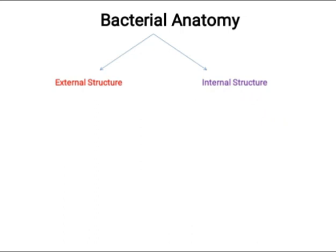Bacteria have external structures which are externally present. Starting from the outside, we have the cell wall, and below that the cell membrane. The cell membrane also borders internal structures. So bacteria have both external and internal structural components.